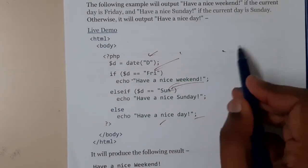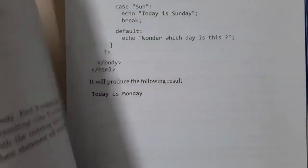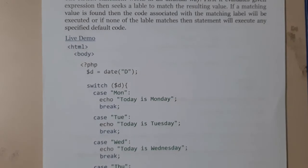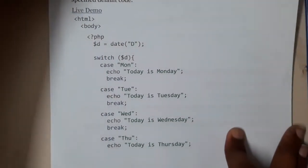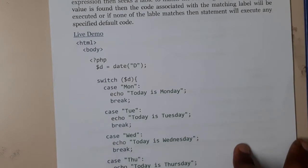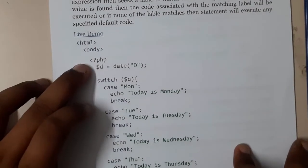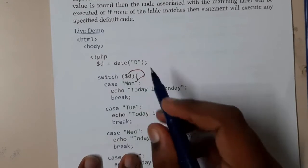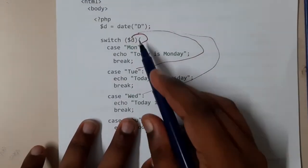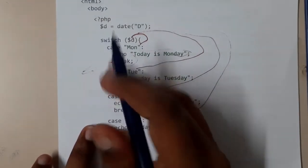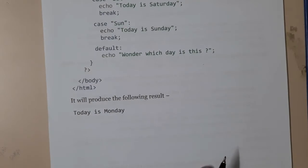Similarly, we have switch statements. In C and C++, switch cases are very commonly used — even in mini projects. When writing PHP code, we write it in HTML enclosed within the PHP tags. You initialize the date to $d, and switch checks $d's value against each case value. When it matches, it prints the statement and break terminates out of the whole switch block.